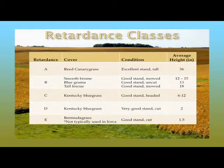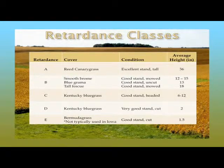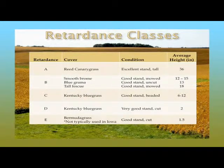Retardance classes vary for different vegetation. Reed canary grass may have high resistance to flow — a high retardance class A. Kentucky bluegrass with a good stand headed out may have a middle retardance class C, indicating middle resistance to flow. However, Kentucky bluegrass moves down to retardance class D — less resistance to flow — if it has been cut to about two inches in height.